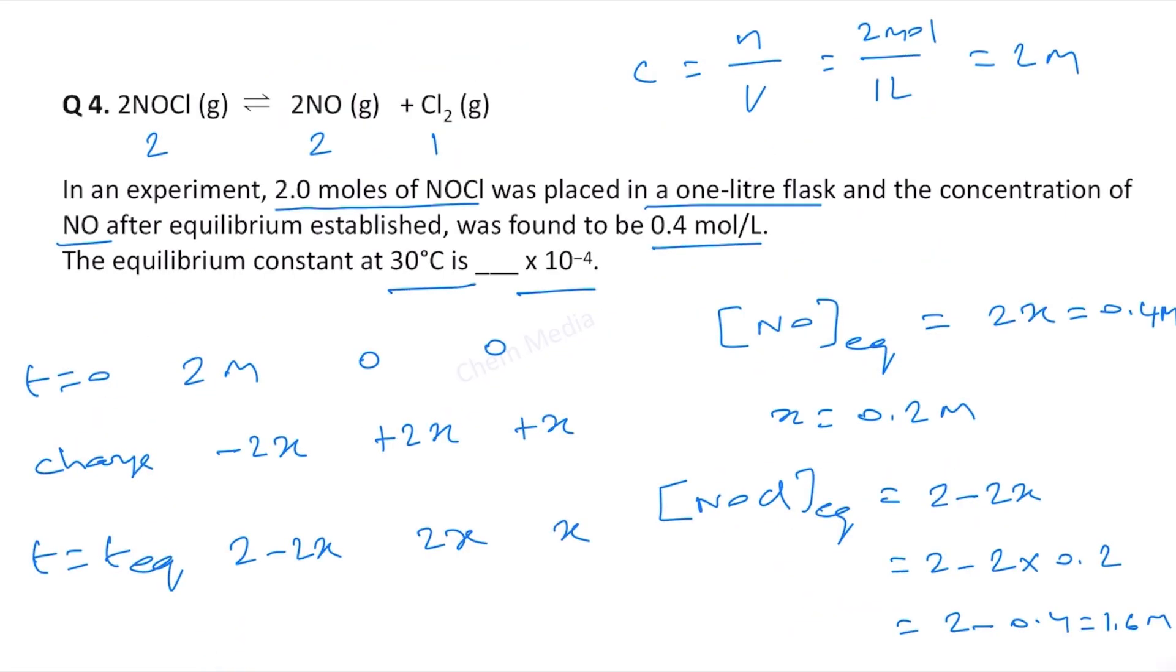But the final answer we want in terms of 10 to the power minus 4, therefore we can write it as 125 because the Kc value we got is 0.0125. So when we are writing in terms of 10 to the power minus 4 we have to write it as 125, therefore 125 is the correct answer.